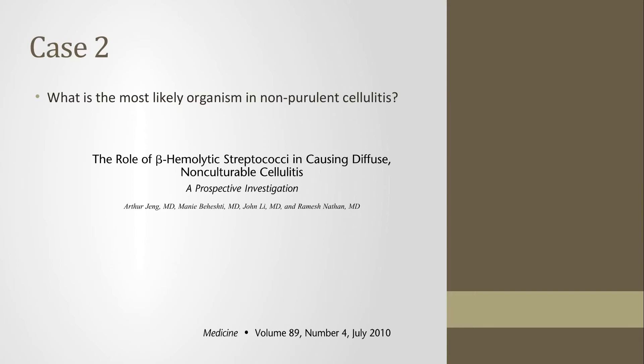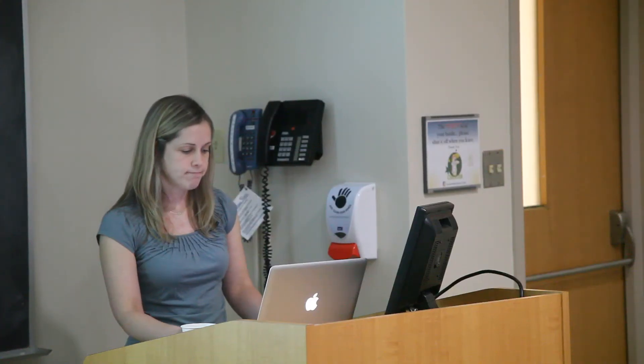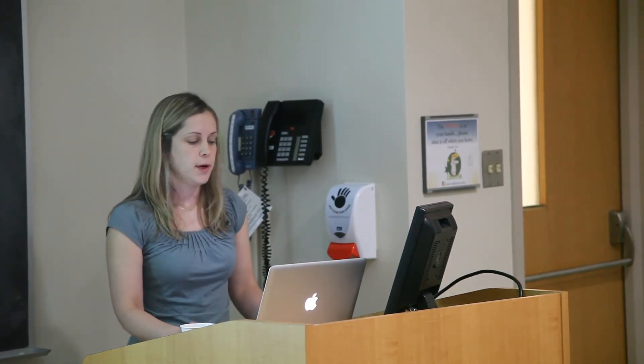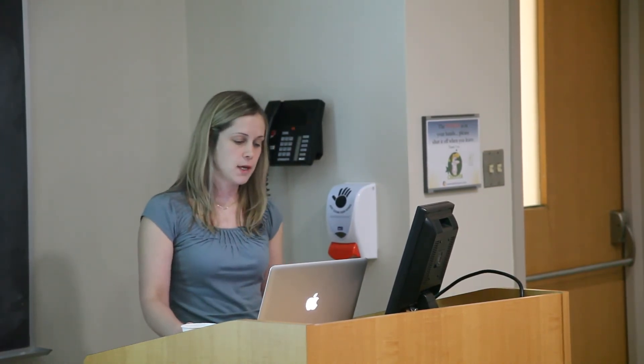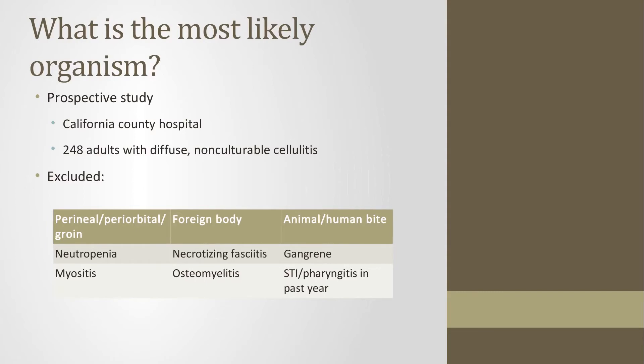This study looked at the role of beta-hemolytic strep in causing diffuse non-culturable cellulitis and came out a couple years ago. It's a prospective study at a California county hospital. They had 248 patients with diffuse non-culturable cellulitis, so not associated with some kind of purulent wound that you could culture. They excluded people who had perineal, periorbital, or groin locations, anybody who could have had an opportunistic infection like people with neutropenia, different bugs involved so animal or human bites, and underlying disorder like osteomyelitis.